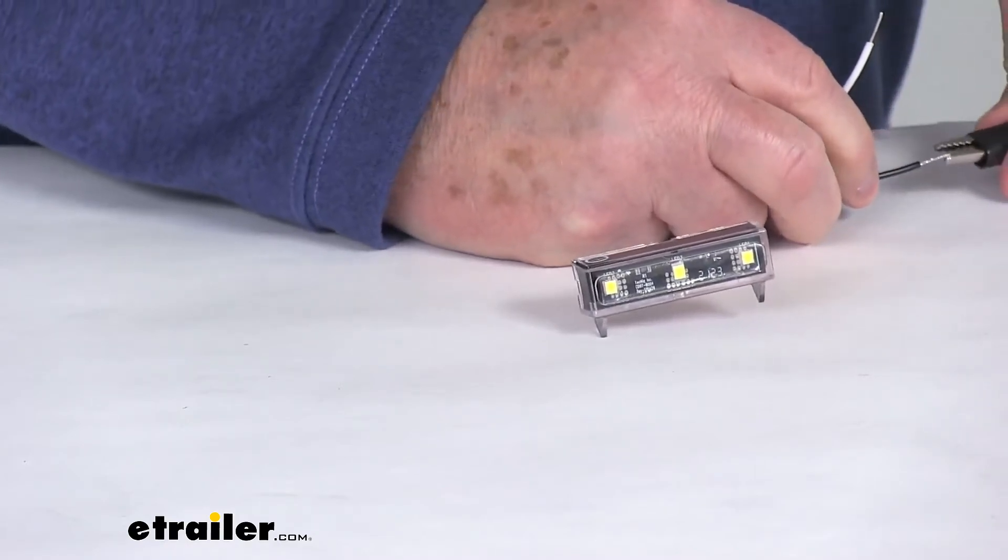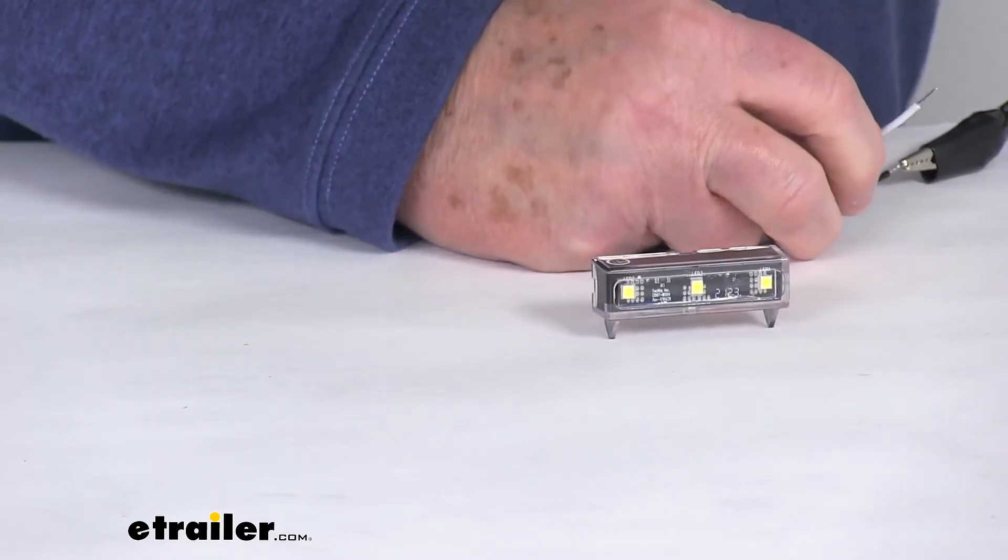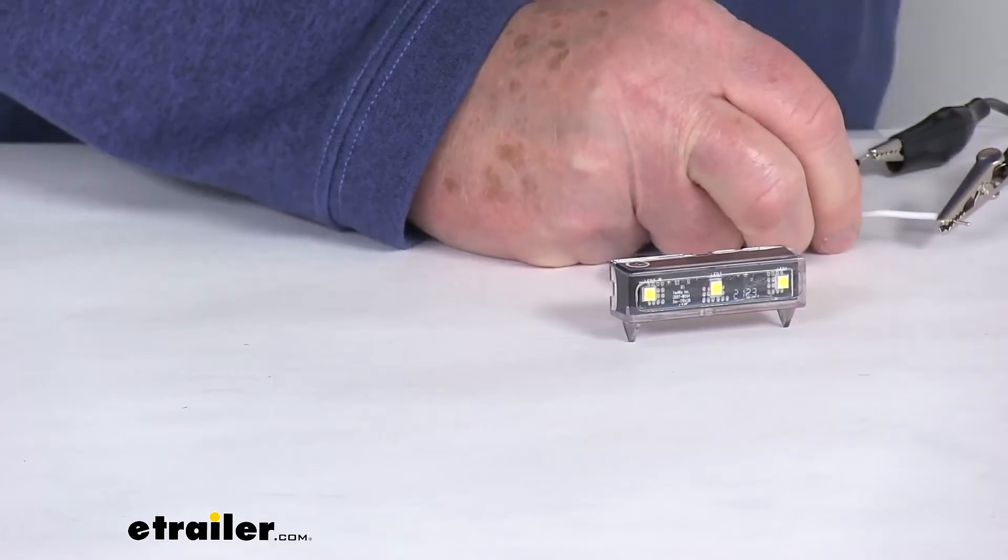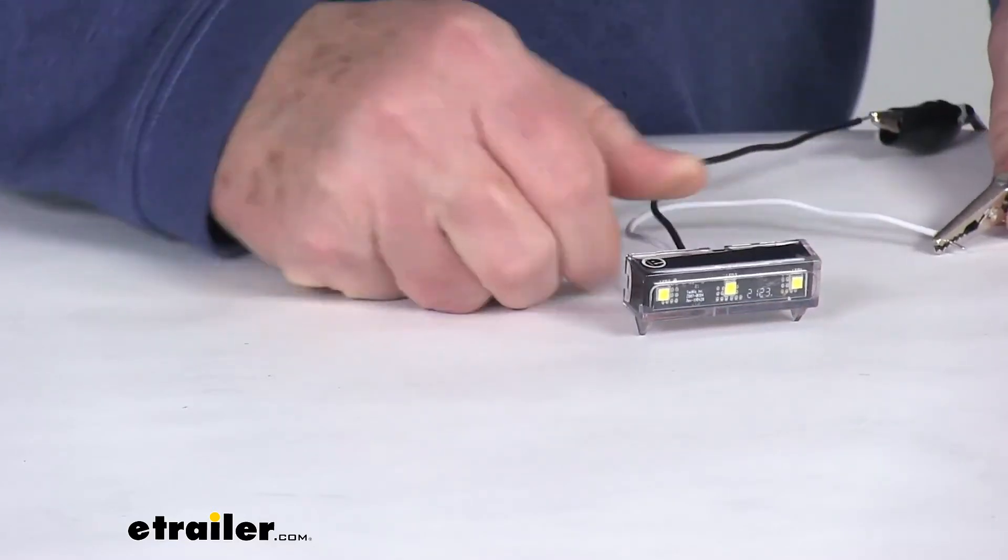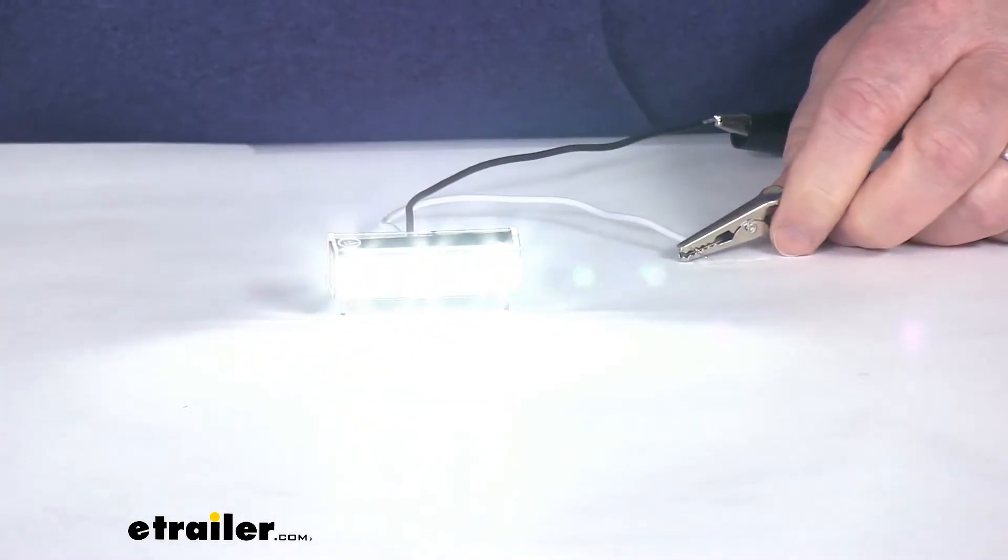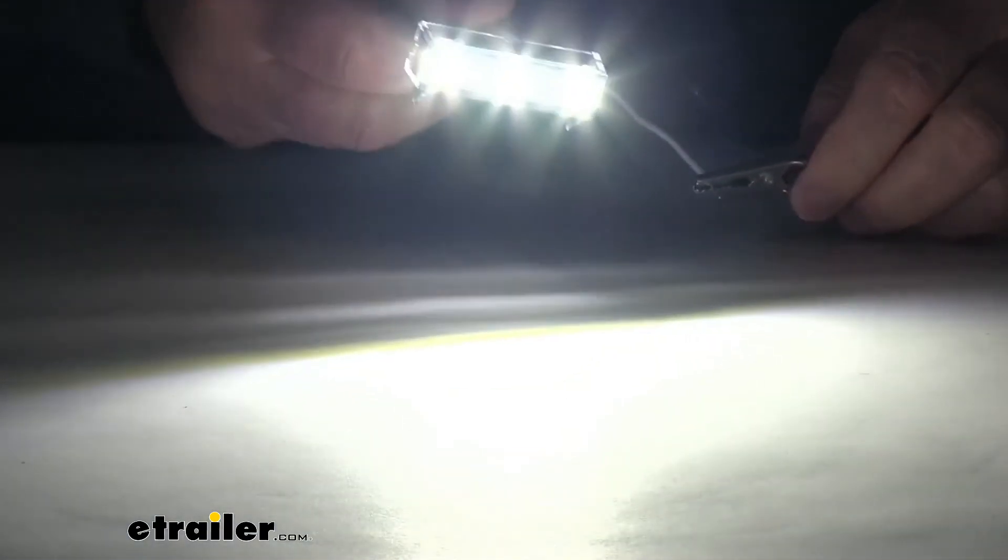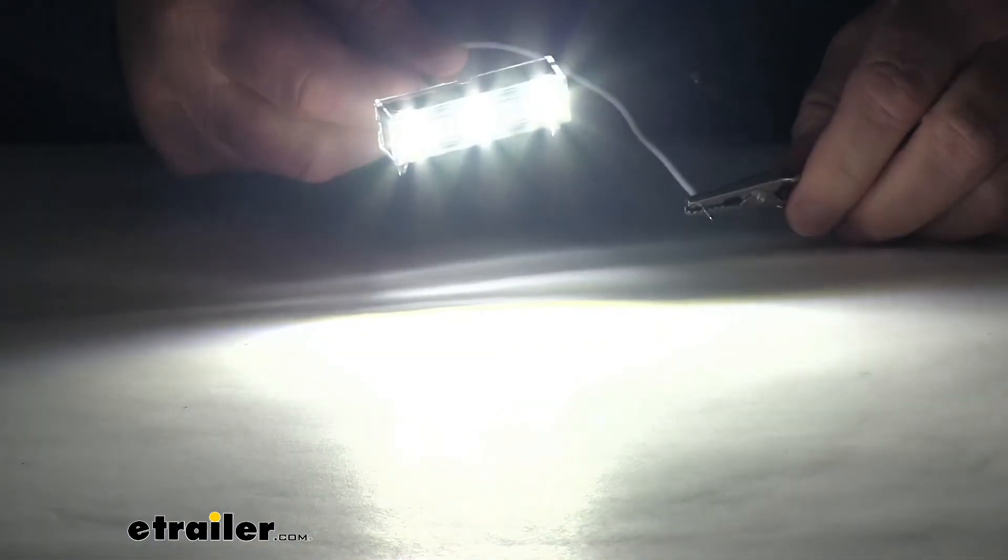So what I'm going to do now is go ahead and hook up our 12 volt power. And once we have that hooked up, I'll go ahead and turn on the 12 volts. And there you can see the bright. Go ahead and turn off the overhead lights. And there's your bright white. You can see the three LEDs.